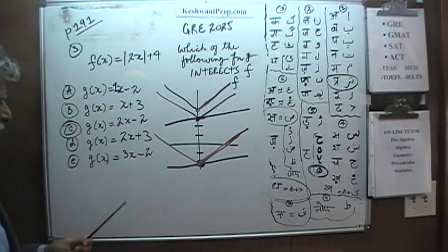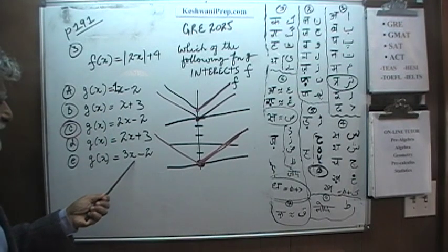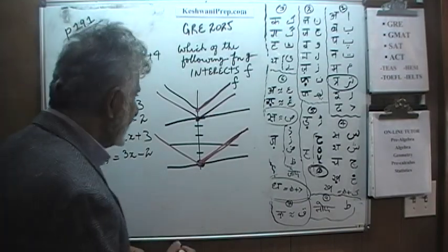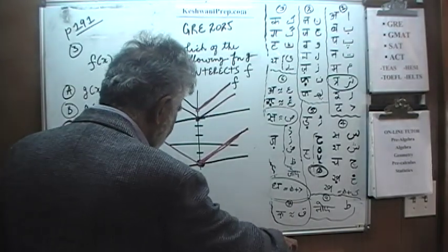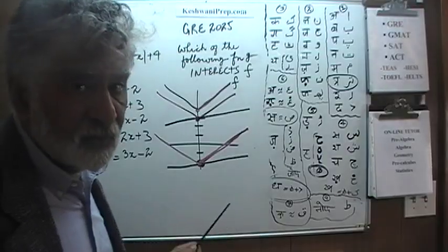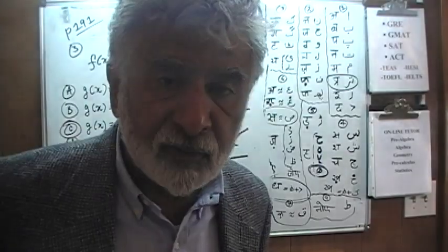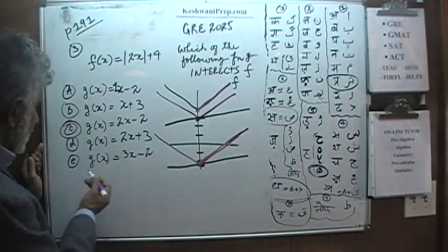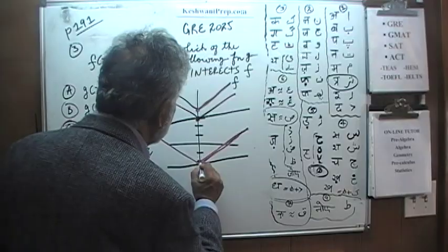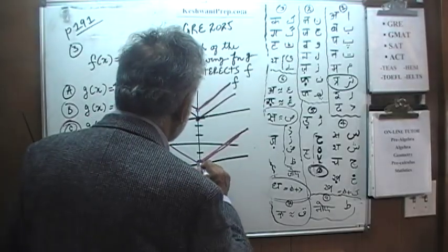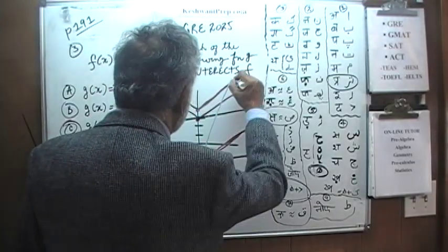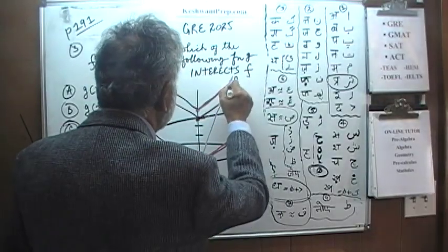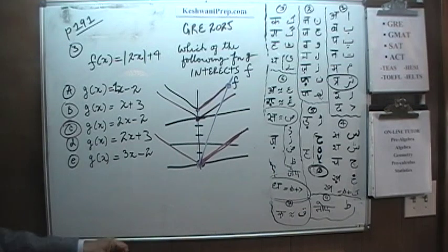We need something with a slope greater than 2. The last answer choice starts at negative 2 but has a slope of 3. Because it has a slope of 3 — steeper than f — it will eventually intersect. We are not interested in the exact point of intersection; we just have to locate a function g that intersects function f. Because this last one is steeper, it will somewhere intersect f. It has to intersect because it has a bigger slope.